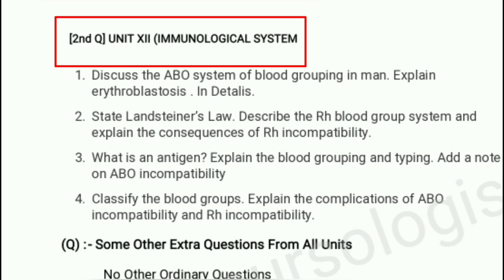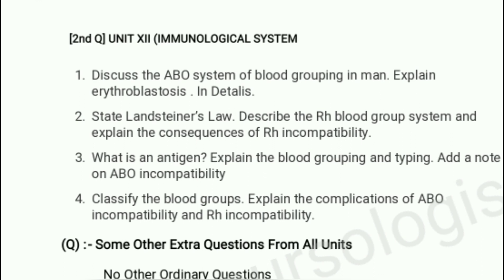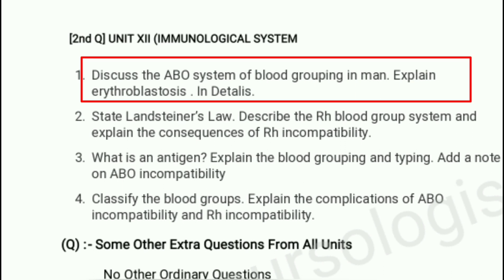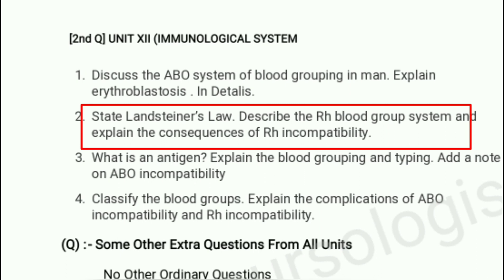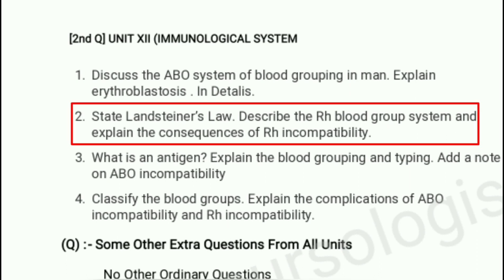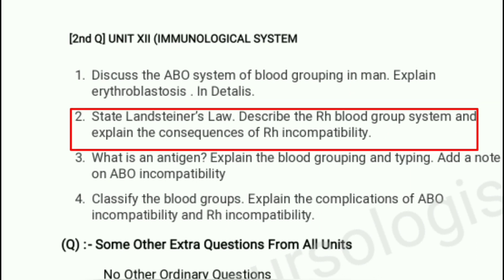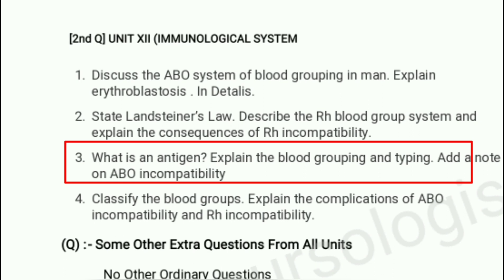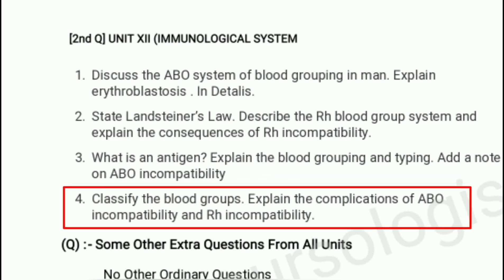The second standard question is from unit 12, the immunological system. Important questions include: discuss the ABO system of blood grouping in man and explain erythroblastosis in detail. State Landsteiner's law, describe the Rh blood group system and explain the consequences of Rh incompatibility. Define antigen, explain blood grouping and typing, and add a note on ABO incompatibility. Classify blood groups and explain the compatibility of ABO and Rh incompatibility.